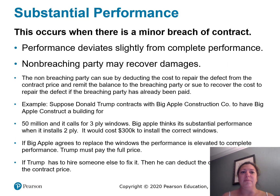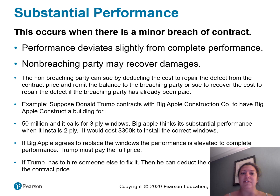Substantial performance occurs when there is a minor breach of contract — performance deviates slightly from complete performance. The non-breaching party may recover damages. The non-breaching party can sue by deducting the cost to repair the defect from the contract price and remitting the balance to the breaching party, or sue to recover the cost to repair the defect if the breaching party has already been paid.